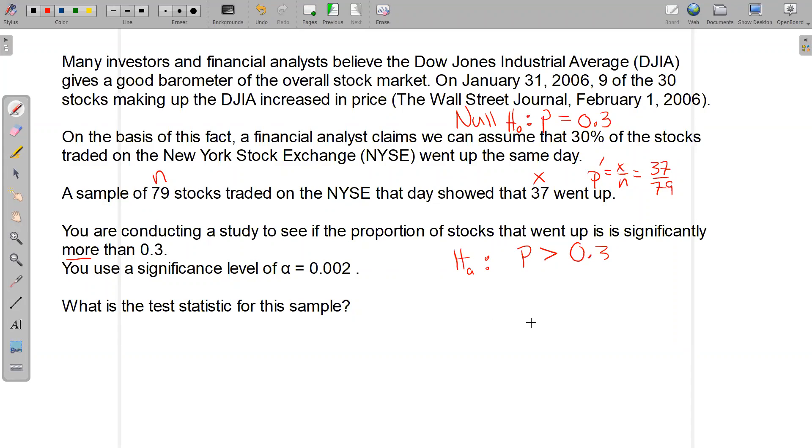So here we get to do a P value. We need to make this calculation here. We're also going to need the standard deviation of the sampling distribution, which is P times Q over N inside the square root. For us, that would be the 30% from the null. Q is always one minus that, so 70%, divided by the sample size 79 and take the square root.